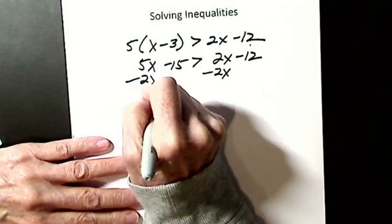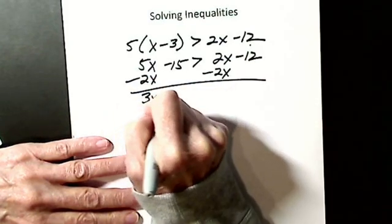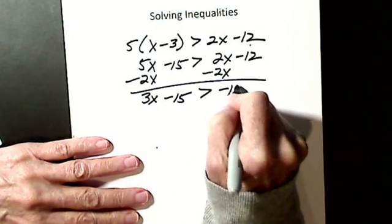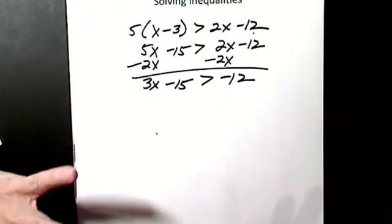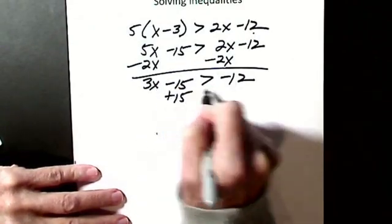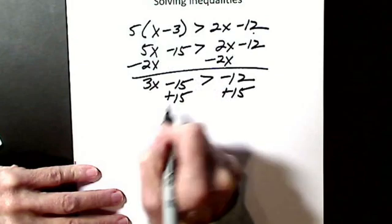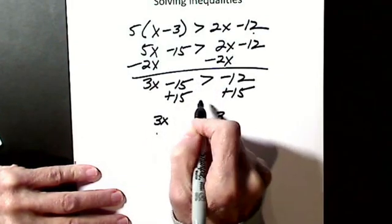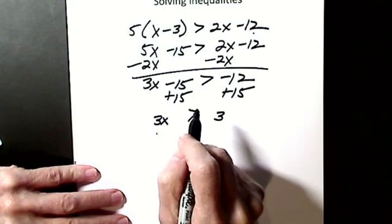Solve the equation. Subtract 2x, subtract 2x. 3x minus 15 is greater than negative 12. I'm still solving just like an equation. I want x all by itself. Add 15, add 15. Here I get 3x, here I get 3. I still added 15.